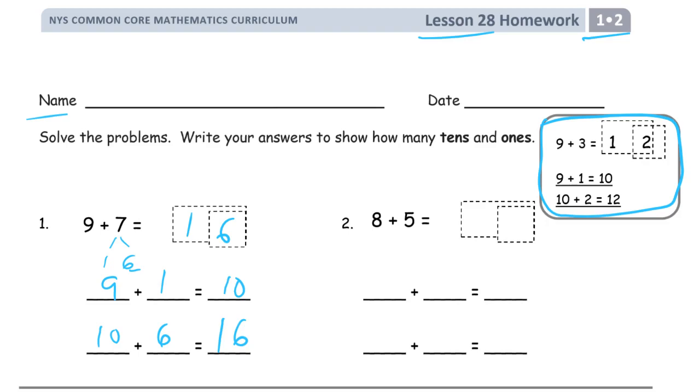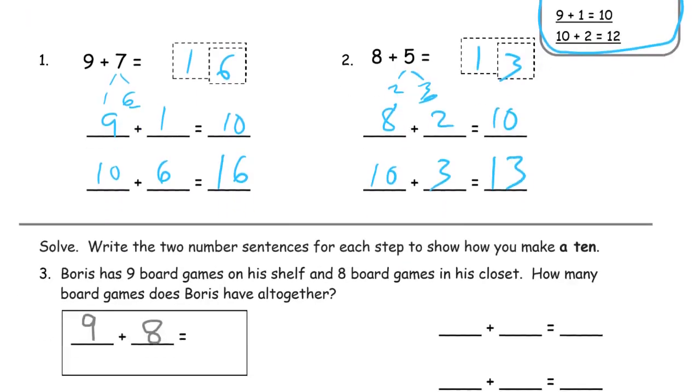8 plus 5, I'm sure you remember, 8 needs a 2 to make 10, and it's 2 and 3 that make 5. So here we go, 8 plus 2 is 10. Then we have to add that 3 to the 10. 10 plus 3, 13. 13 is a 10 and 3 ones. That's what you have to have for that first section.